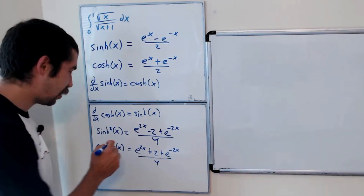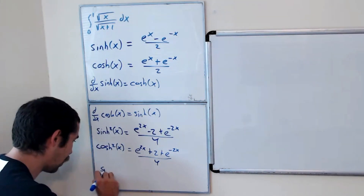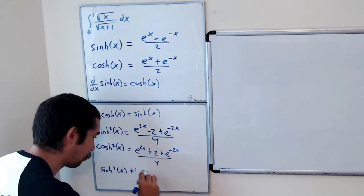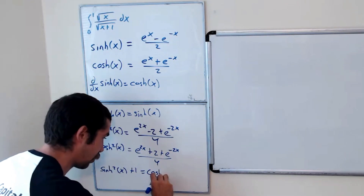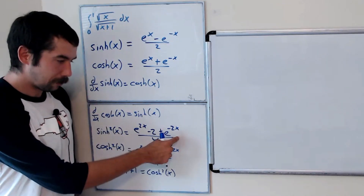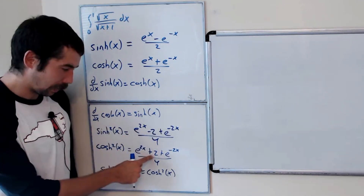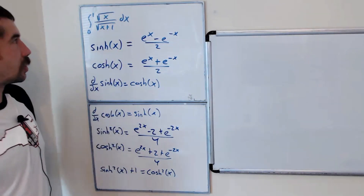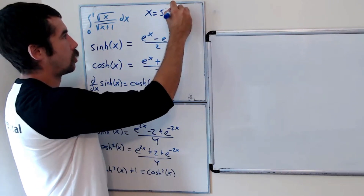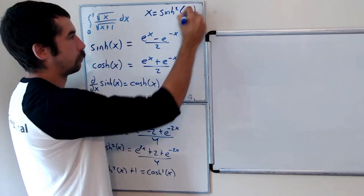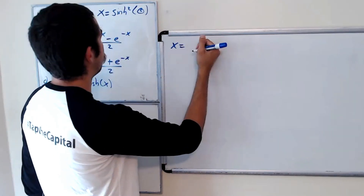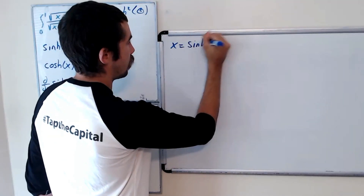It's easy to see that sinh²(x) plus 1 equals cosh²(x) — adding 1 is like adding 4 to the numerator, which gives us the positive 2. So our substitution is x equals sinh²(θ).